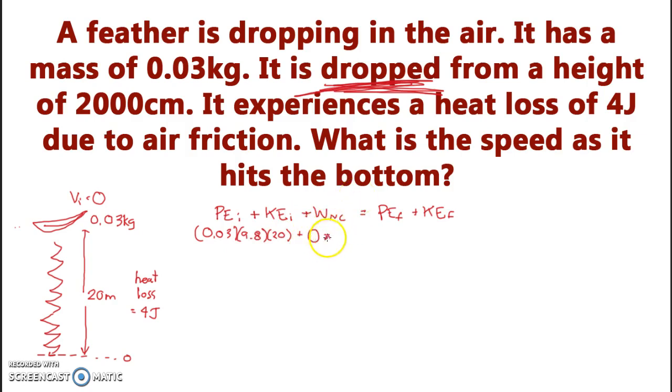So it's going to be equal to 0. And then I must add my non-conservative forces, which is 4 joules. But remember, I'm adding negative 4. I'm adding the negative 4 because this has to be negative. It is a loss of energy. And this will be equal to my final potential energy. Ah, awesome. My height is 0. This is 0. So nice. And then my final speed, I don't know what my final speed is. My kinetic energy is 1 half times 0.03 times my v squared.